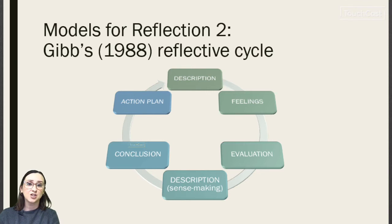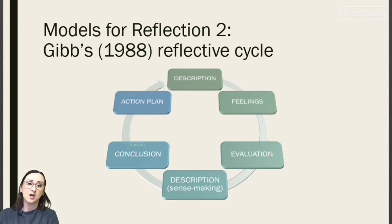The next stage is the conclusion, where you develop further insights and attempt to answer: what else could I have done? The final stage is the action plan, where you take the answer to that question and put it into action for the next similar event. Now it's your turn — pause the video and complete the reflection exercise on the worksheet using Gibbs' cycle. You should also consider which model you think is more effective for reflection.